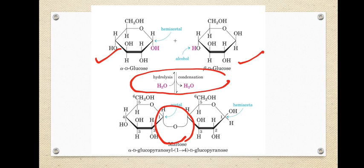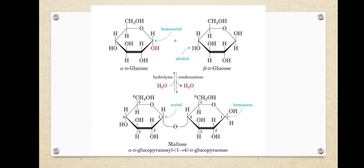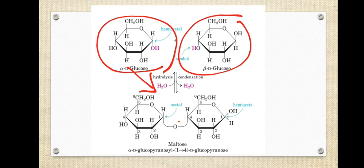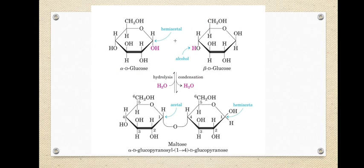When the glycosidic bond is formed, it is formed by the condensation of a molecule of water. If you add that same water molecule back across this bond, the two monosaccharide units are going to be separated — that is hydrolysis. Hydrolysis is the opposite of condensation. So a glycosidic linkage is formed when a molecule of water is eliminated between two monosaccharide units.